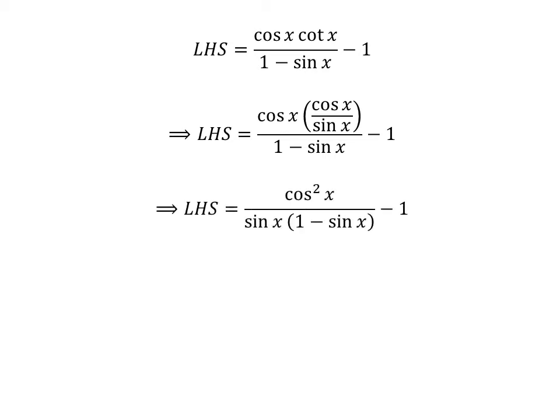Further simplification gives us the left hand side equal to the square of cosine of x, upon sine of x, times 1 minus sine of x, minus 1.